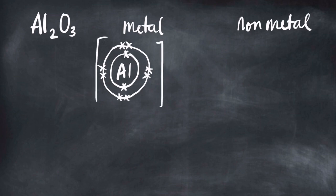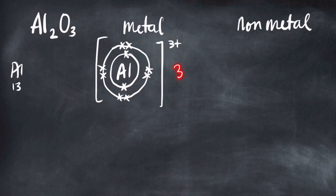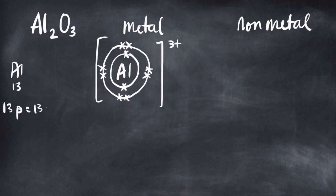The charge shown is 3+. Now, aluminum has an atomic number of 13, but we only put 10 electrons because 3 of its electrons will go to oxygen — that's why there's a 3+ charge. Normally, the number of protons equals the number of electrons, but since aluminum gives away 3 electrons, it now has 13 protons and 10 electrons, giving it a charge of 3+.